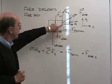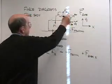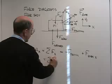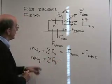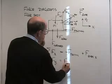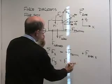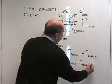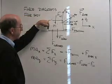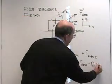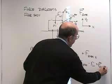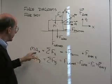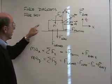Then m times a in the y direction equals the sum of the forces in the y direction: the force of the ground upward (no x component), minus the force of gravity, minus the force of the weight of the person sitting on top, plus the y component of the force of the rope in the upward direction. So I've got two equations to describe the two components of the acceleration of the object.